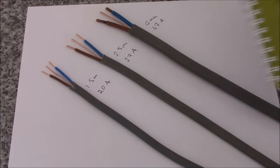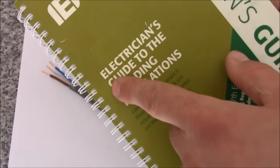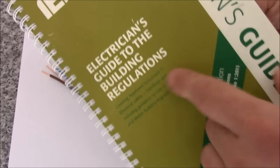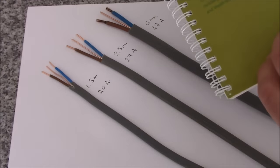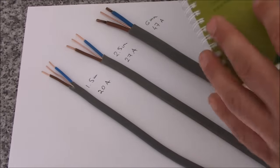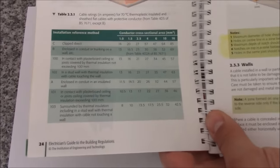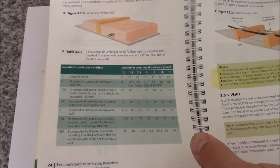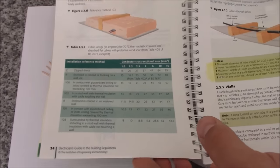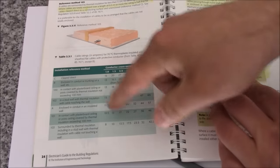And how do I know all of this? From the book The Electrician's Guide to the Building Regulations. But you can also find this on the internet. You have to just search a bit. So on page 24 there is a table, table 2.3.1. And this explains everything.